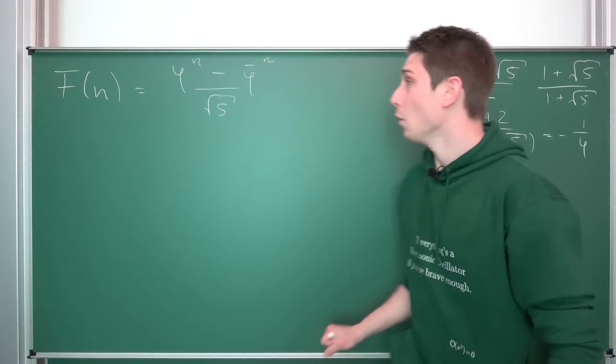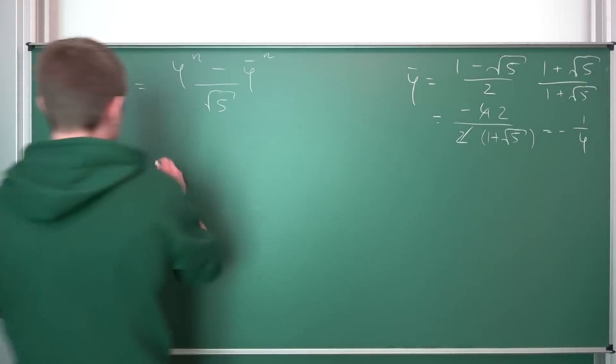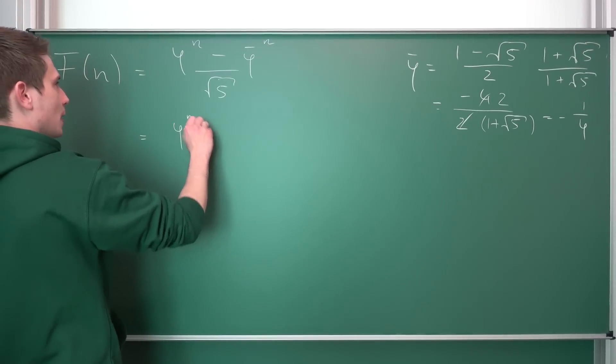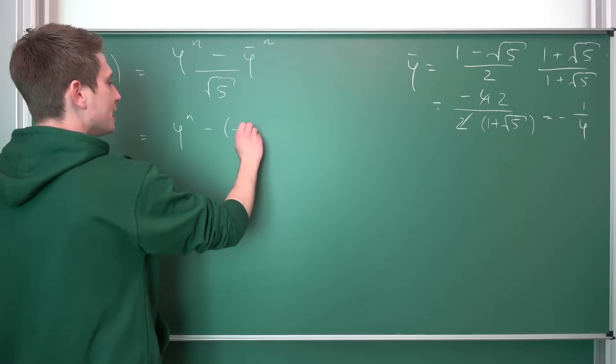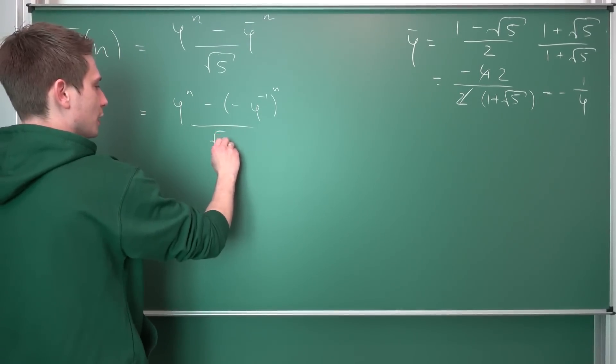Now we are going to plug this new definition into here. Let us go ahead and get started. So, phi to the nth power minus negative phi to negative 1 power to the nth power over the square root of 5.